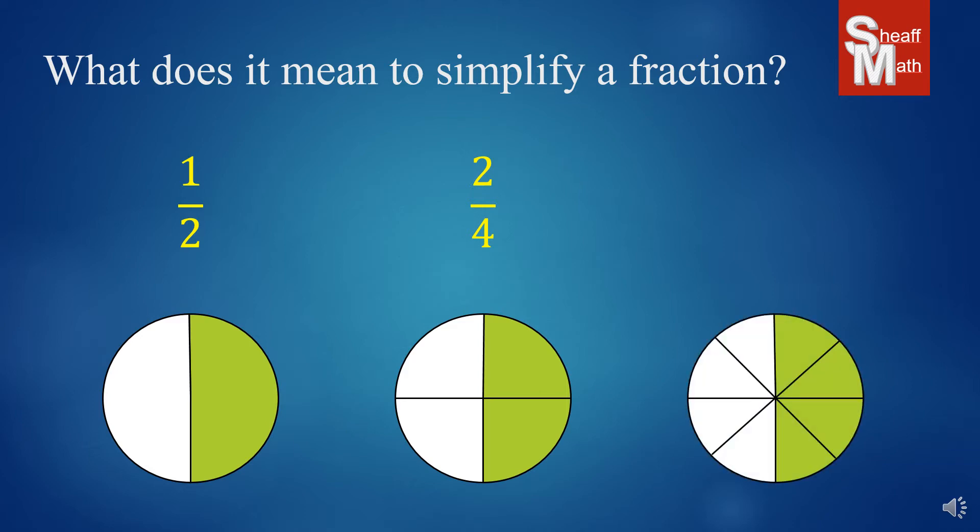I can keep going and putting it into eighths, eight equal parts, and there's four of them, and so four out of eight are shaded. Nothing has changed as far as the shading, and what this tells you is that one-half, two-fourths, and four-eighths are equivalent. They look different, they're written differently, but they are all equal.